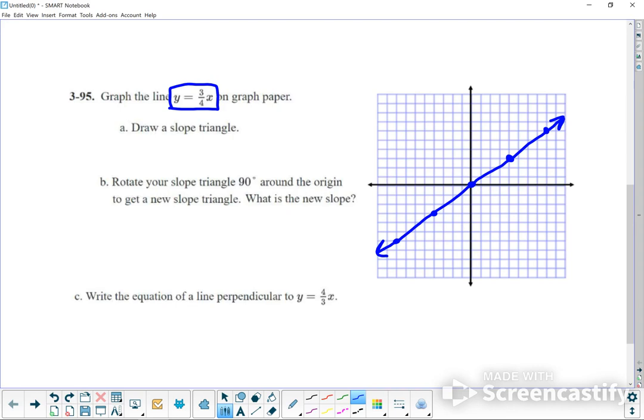Draw a slope triangle. So a slope triangle, I would use between any two points. I would use these two points. And this would be the change in y. It's going to be up 3. The change in x is going to be over 4. Which means that our slope is up 3 over 4.